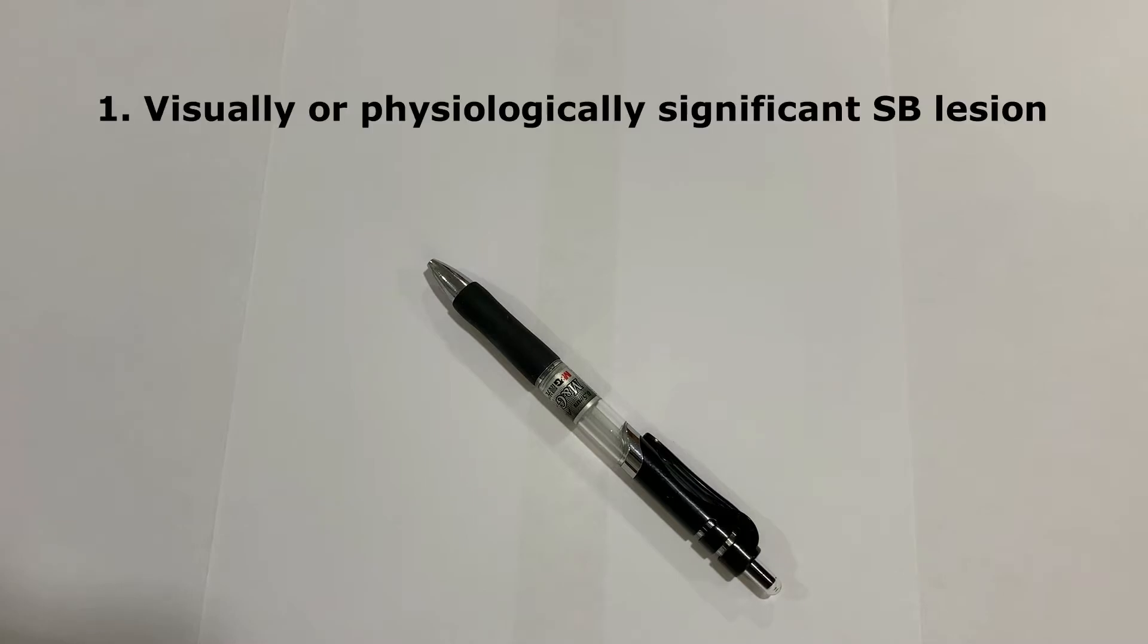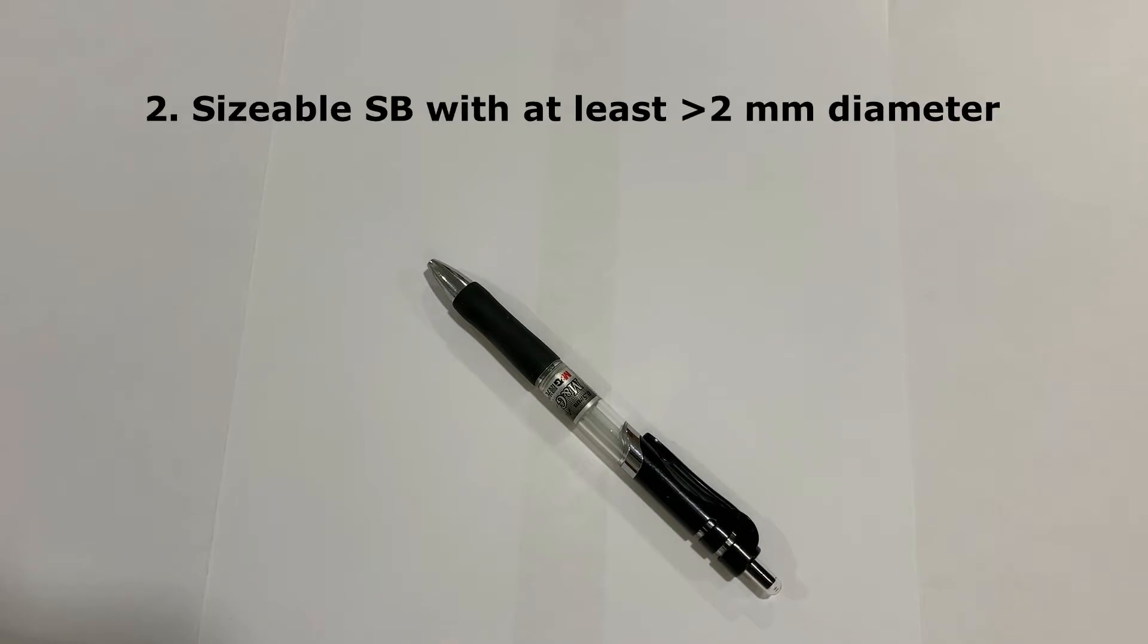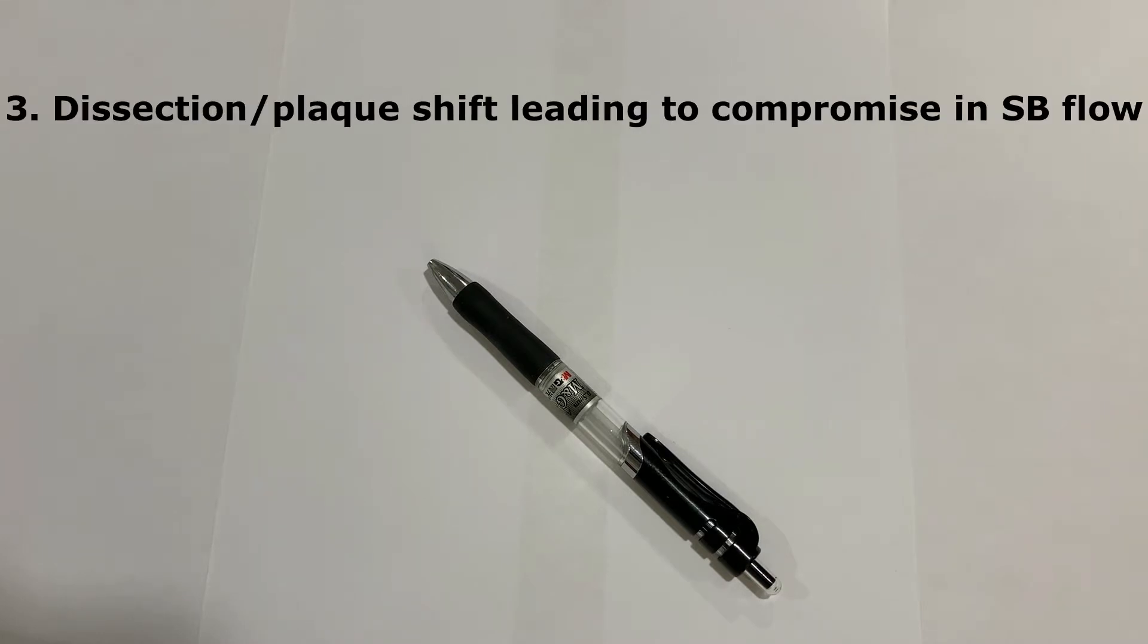First I should give you a background. There are three types of bifurcation lesions where one should start with planned two-stent technique: visually or physiologically significant side branch lesion, significant diameter of the side branch lesion at least 2.5 millimeter or 2.25 millimeter, and dissection or plaque shift leading to flow compromise after predilatation with balloon.